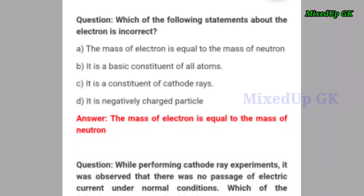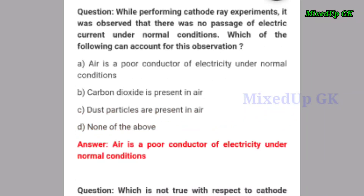Next question: while performing cathode ray experiments, it was observed that there was no basis of electric current under normal conditions. Which of the following accounts for this observation? The correct answer is option A — air is a poor conductor of electricity under normal conditions.